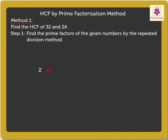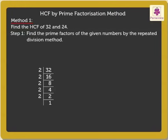Dividing 32 by 2, we get 16. On dividing 16 by 2, we get 8. Again, we divide 8 by 2 to get 4. And 4 divided by 2 gives 2. As 2 is a prime number, we divide it by itself and get 1 as the quotient. Thus, the Prime Factorization of 32 is 2 × 2 × 2 × 2 × 2.